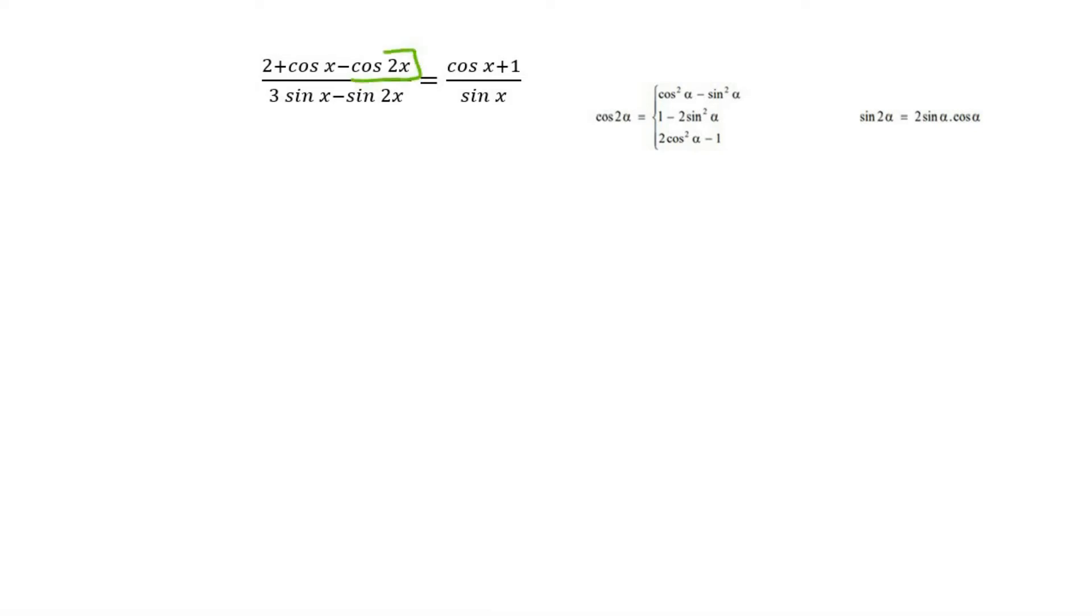When you have a cos2x, you never have to guess which one to choose. You look at the answer you're trying to get to, and you realize that answer has more cos. So you're going to choose the option that gives you more cos, and that's this one over here.